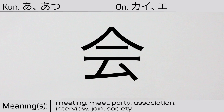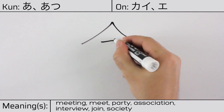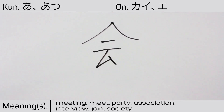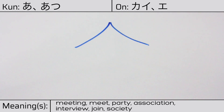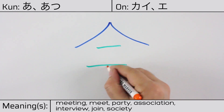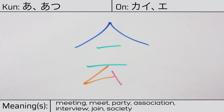Here is the stroke order. This character is made up of the following radicals or parts: The stylized person, or hito, known as hitoyane, at the top. Followed by Kanji ni, or two. With katakana mu at the bottom.